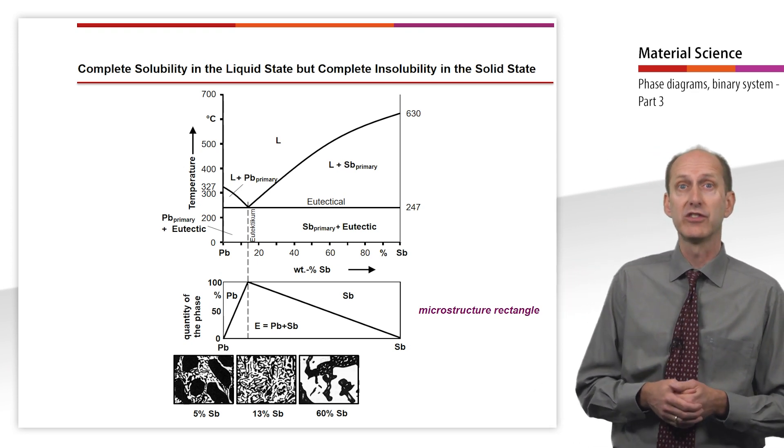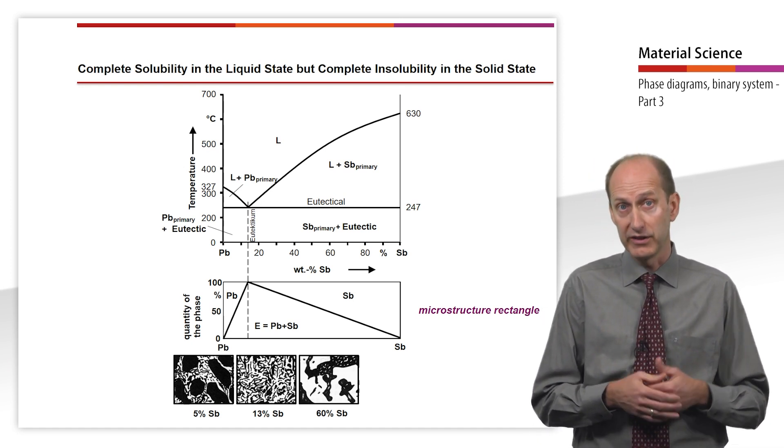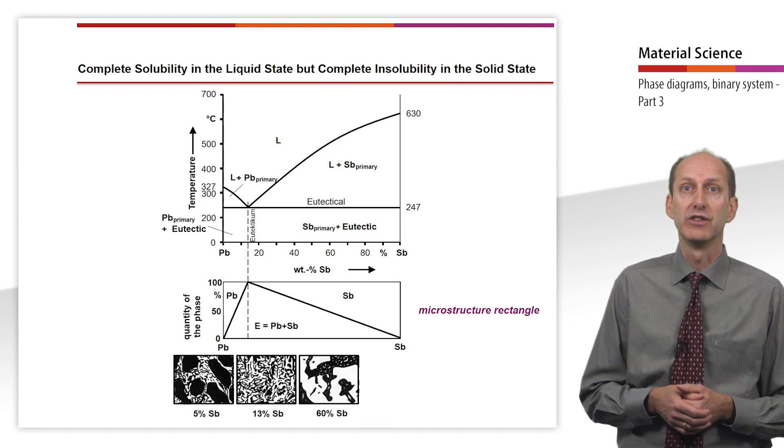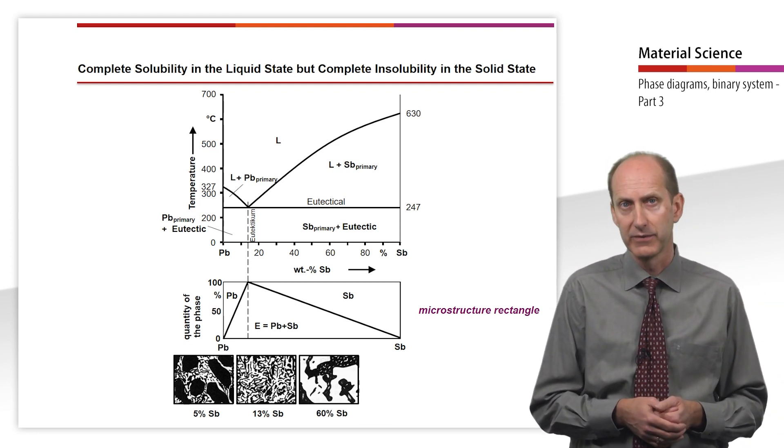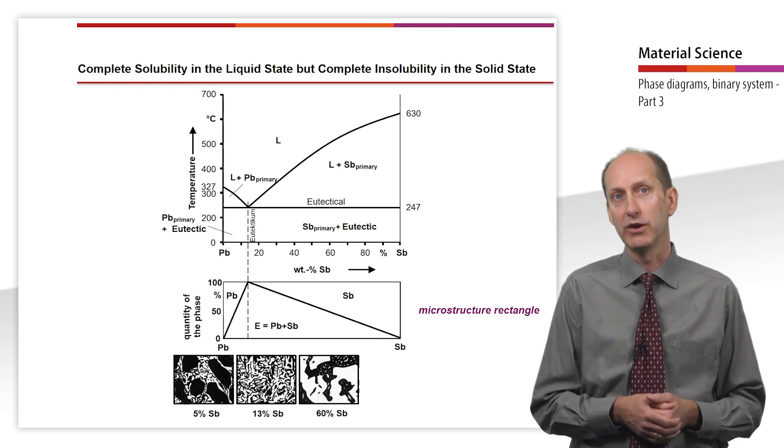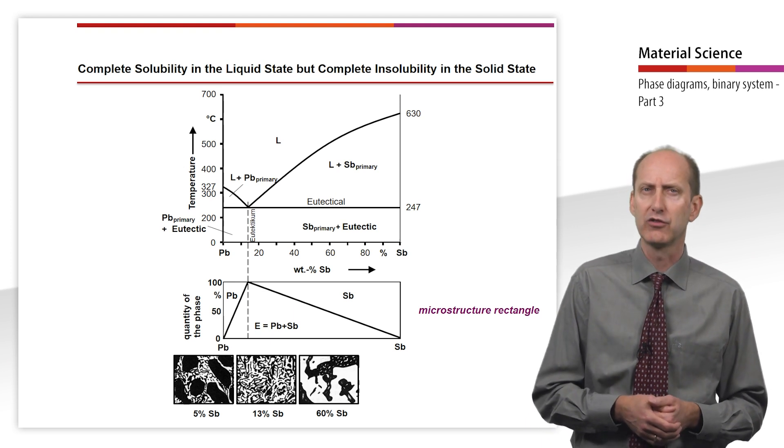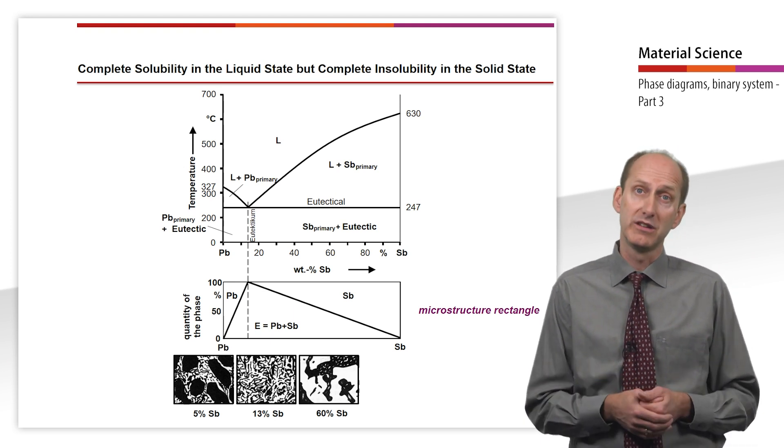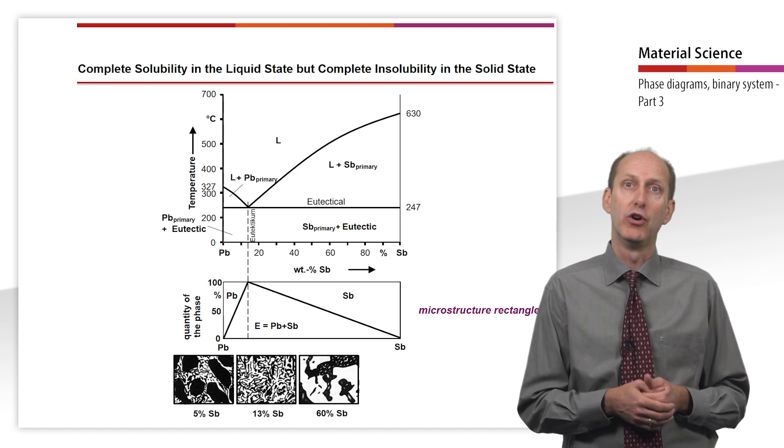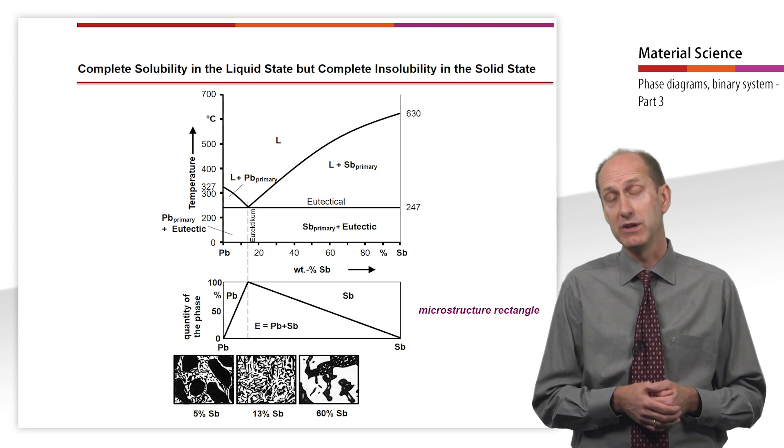Engineers are usually interested in the type and quantity of phases present at room temperature. The desired information is provided by the microstructure rectangle. The boundary lines contained in the figure are always straight lines, since according to the lever rule there is always a linear relationship between the quantity of the phase and the lever's length. Thus, it can be determined from any concentration of this alloy with complete insolubility in the solid state, how many primary solidified crystals of each component lead or antimony and how much eutectic consisting of lead and antimony are present.